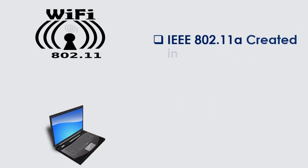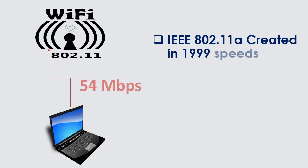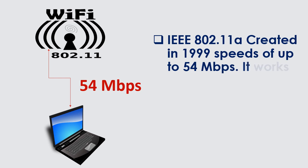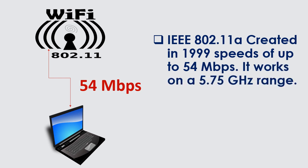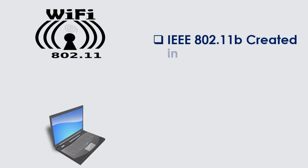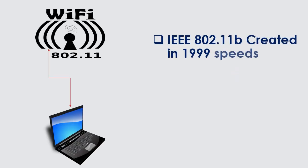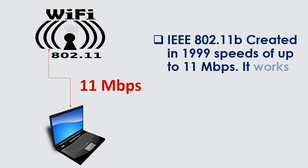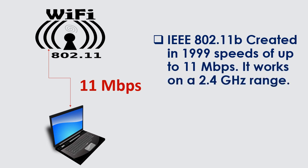IEEE 802.11a, created in 1999, supports speeds of up to 54 Mbps and works on a 5 GHz range. IEEE 802.11b, also created in 1999, supports speeds of up to 11 Mbps and works on a 2.4 GHz range.